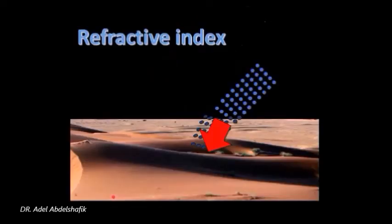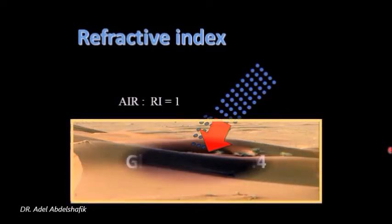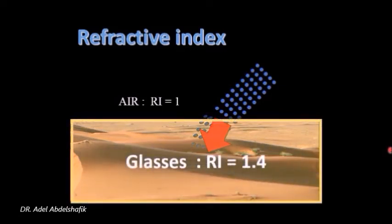What is the refractive index? We say that the refractive index of air is the unit, it's 1. One type of glass has a refractive index of 1.4. It means it has a resistance to the passage of light 1.4 times higher compared to the passage of light in the air.